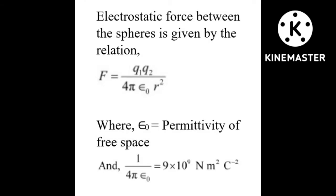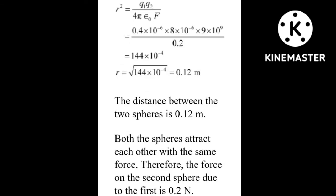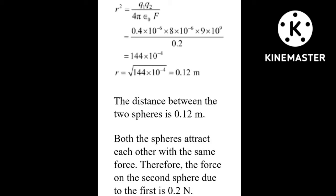To find the distance r, we again use Coulomb's law: F = (1/4πε₀) × q1×q2 / r², where 1/4πε₀ = 9×10⁹ N·m²/C². Rearranging: r² = (9×10⁹ × q1 × q2) / F. Substituting: r² = (0.4×10⁻⁶ × 0.8×10⁻⁶ × 9×10⁹) / 0.2, which gives r² = 144×10⁻⁴.